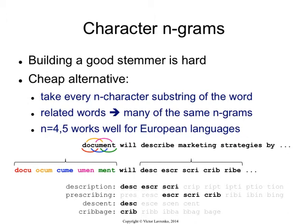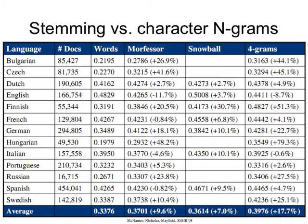You can do this for English, and very effectively for just about any European language. For most European languages, n around four or five works well, so you don't need to mess with lower or higher n-grams. How well does it work? It actually works surprisingly well. There was a study done a few years back on a bunch of European languages comparing effectiveness — how accurate your search engine is — using words versus a good stemmer versus character n-grams.